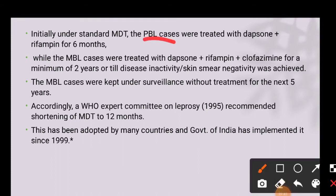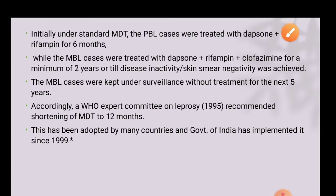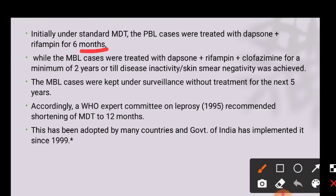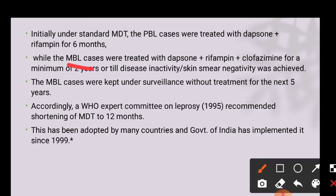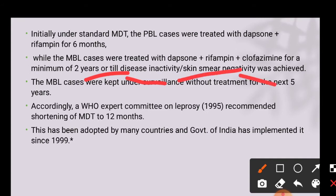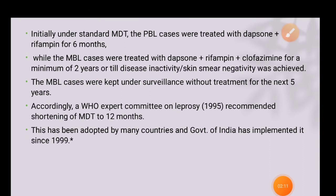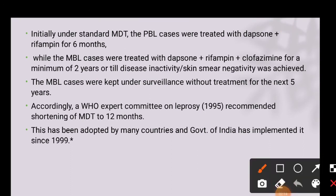Initially, for paucibacillary leprosy — also known as non-infectious — treatment is with dapsone and rifampicin for a period of six months. In multibacillary cases — also known as infectious — the disease is treated with dapsone, rifampicin, and clofazimine for a minimum of two years, or until the disease is inactive or skin smear samples come back with a negative report.